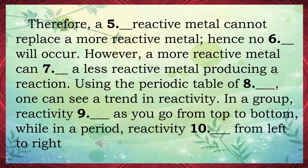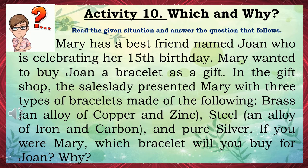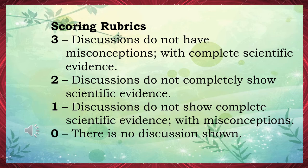In a gift shop scenario, a sales lady presented Mary with three types of bracelets: brass (an alloy of copper and zinc), steel (an alloy of iron and carbon), and pure silver. If you were Mary, which bracelet will you buy for Joan, and why? Scoring rubrics: 3 — discussions do not have misconceptions with complete scientific evidence; 2 — discussions do not completely show scientific evidence; 1 — discussions do not show complete scientific evidence, with misconceptions; 0 — no discussion shown.